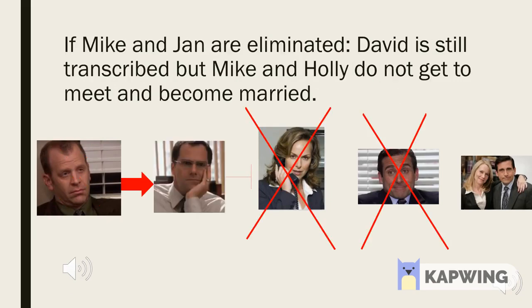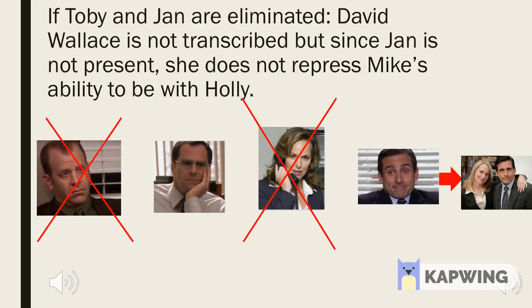There can also be mutations in more than one control. In this double mutation that eliminates Jan and Mike, David is still transcribed, but since there is no Michael, obviously he and Holly cannot get married and the outcome is changed.